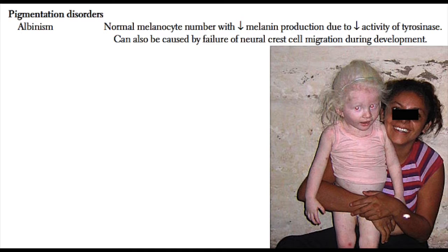Tyrosinase is an enzyme that converts tyrosine into other precursors that will eventually turn into melanin. With an inability of effective tyrosinase, you're going to have an inability to produce melanin.